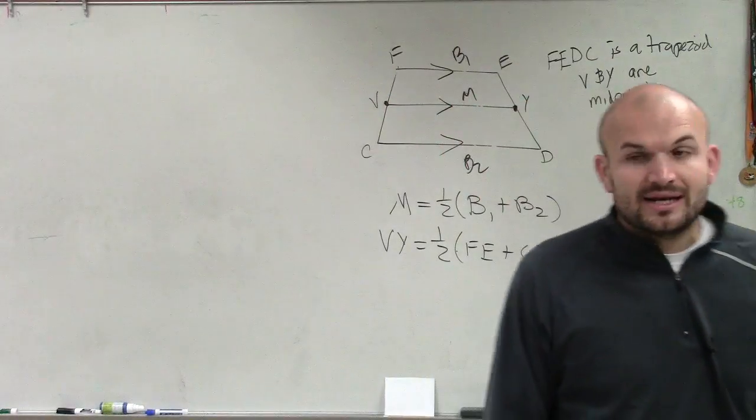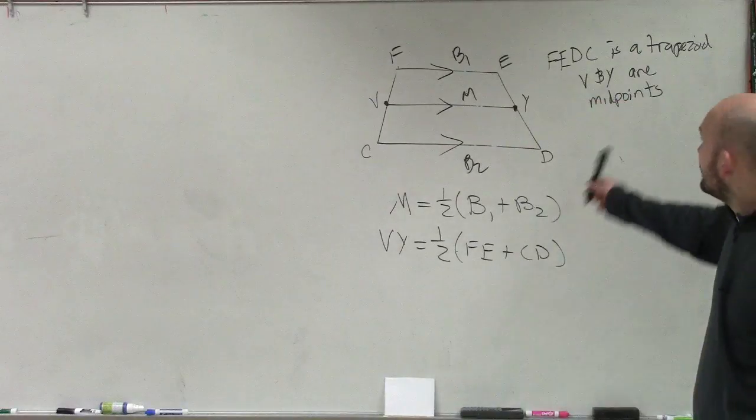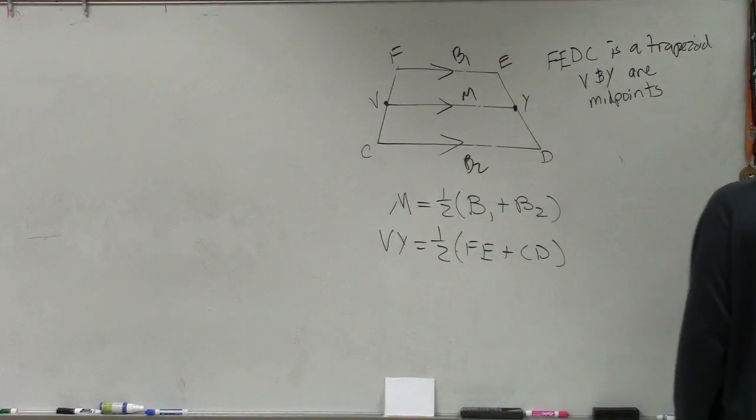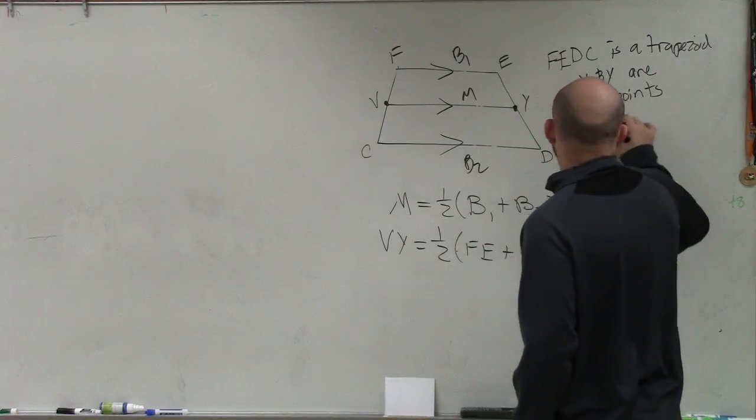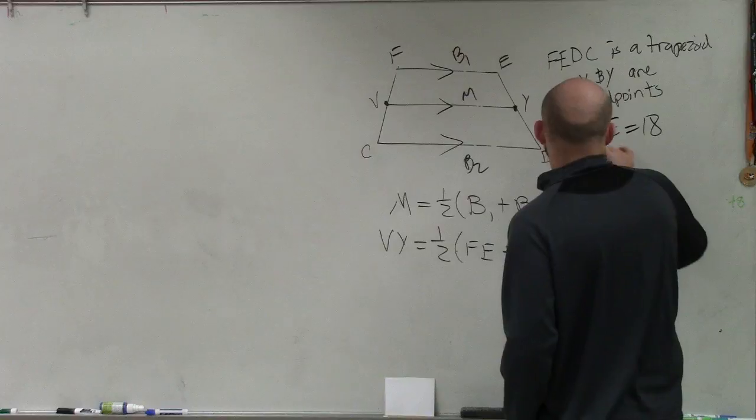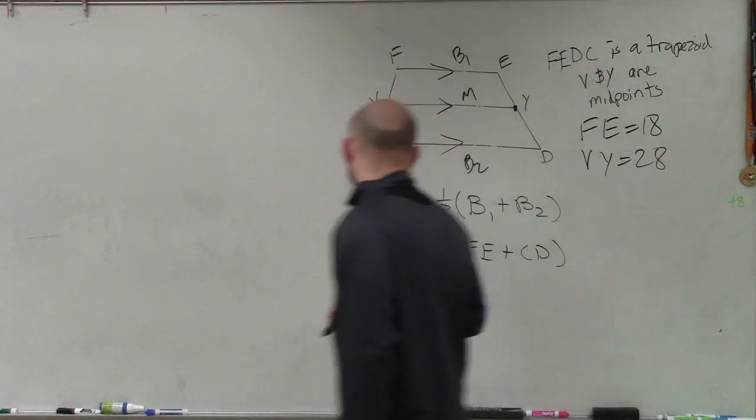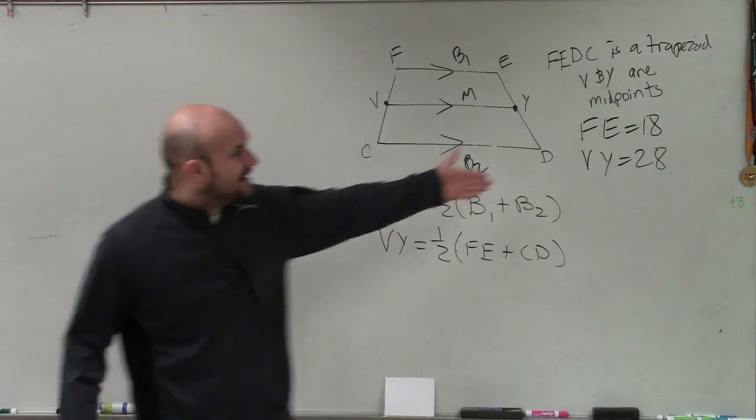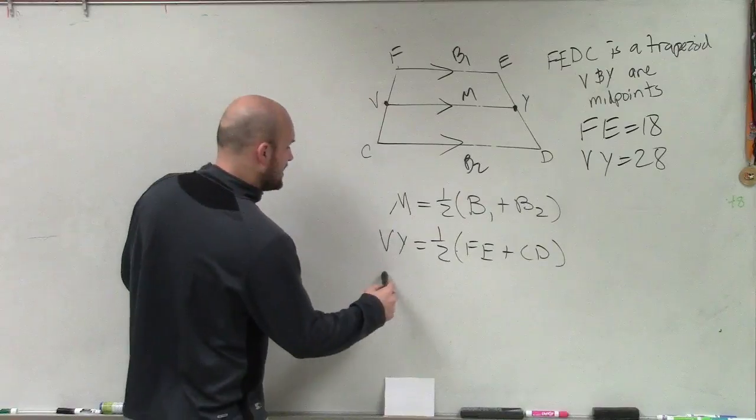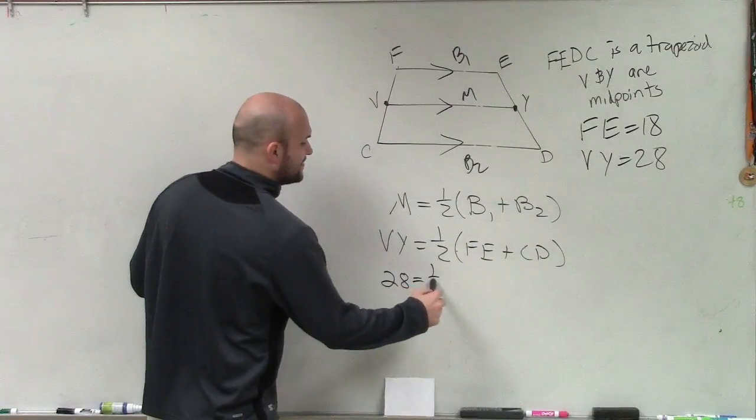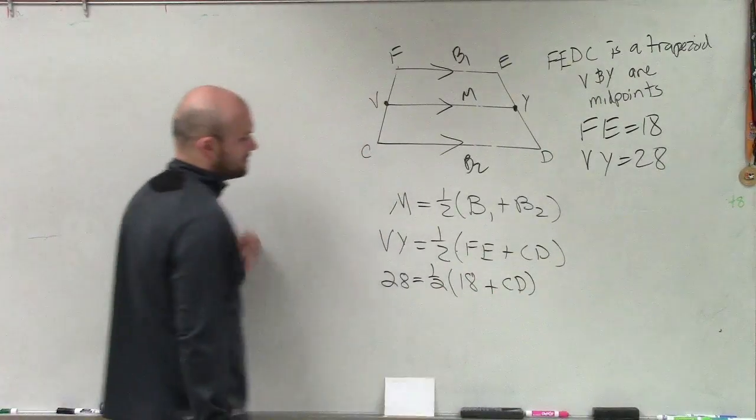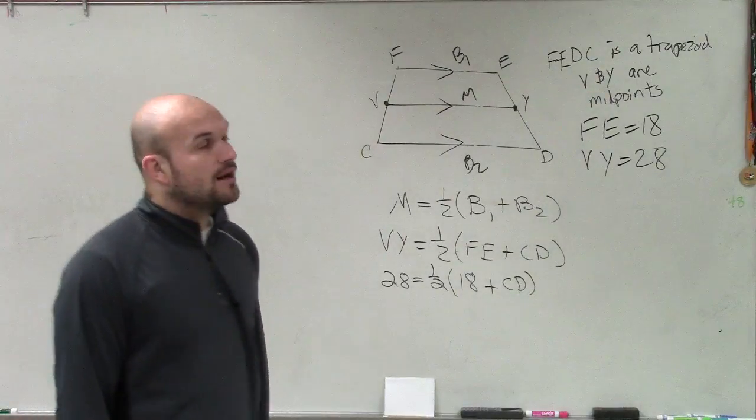This is number six. Now, what's important about this one is we actually know some of these lengths. So you guys can see, oh, we don't. We do know, but I just didn't write them down. For six, no, I'm sorry. This is five. It says FE equals 18 and VY equals 28, all right? So now, guys, I can plug in this information, right? So if VY is 28 equals 1 half, FE is 18 plus CD.